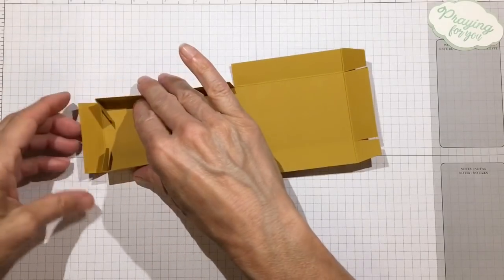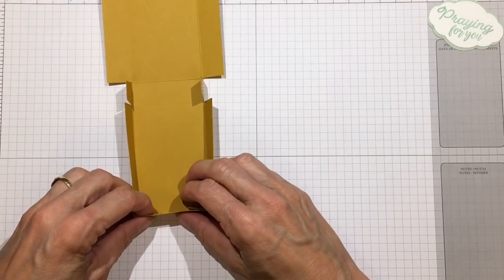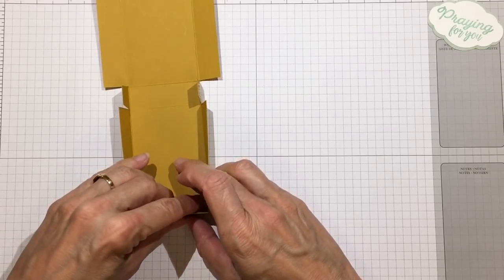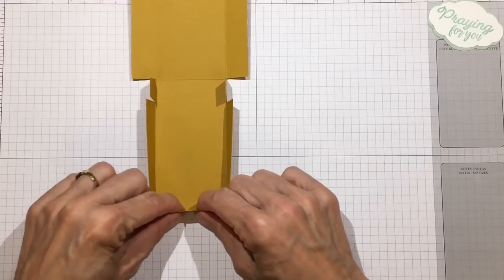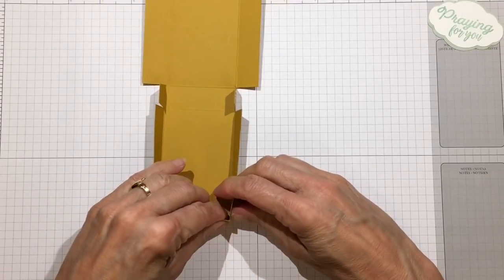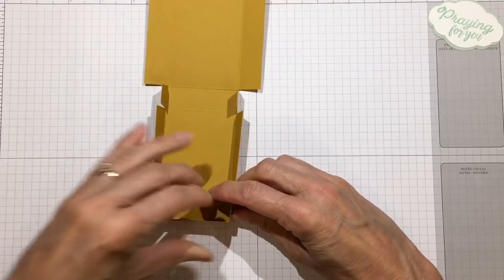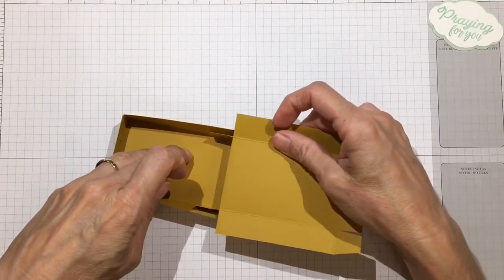I'm going to move these up and we're going to put our front up and just make sure the corners are square. Because it's glue, I'm going to hold that down for a moment. Go ahead and put the back of the box up too.